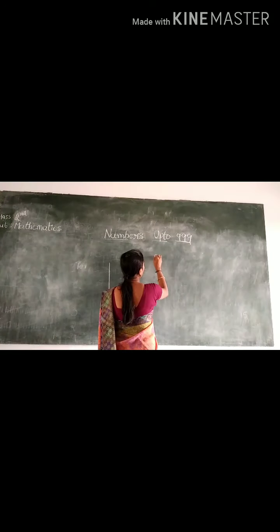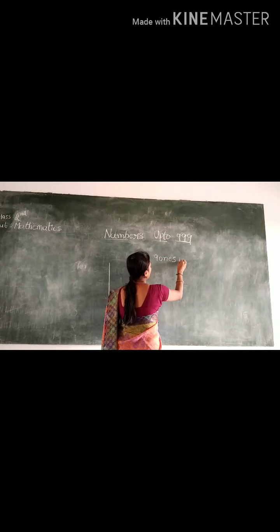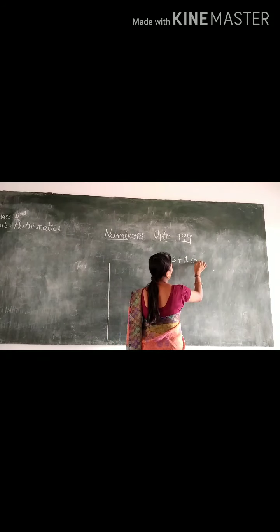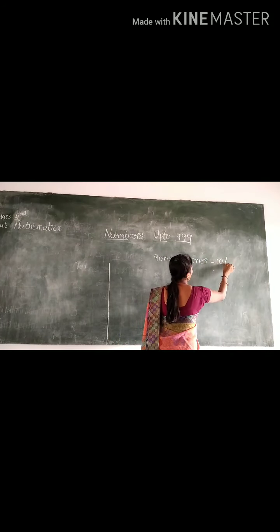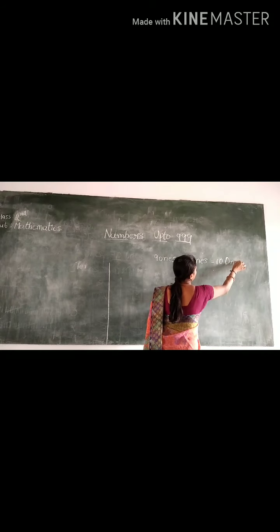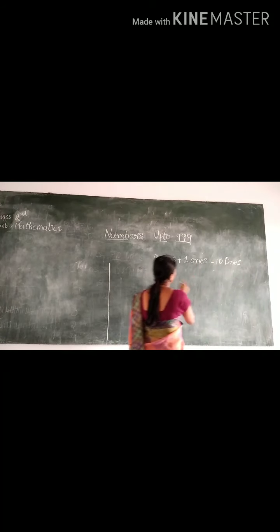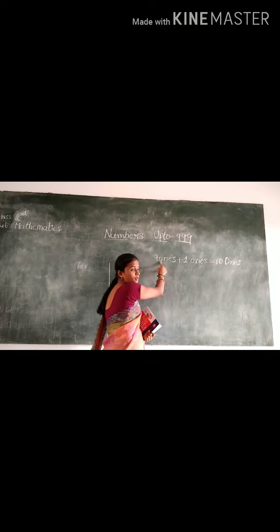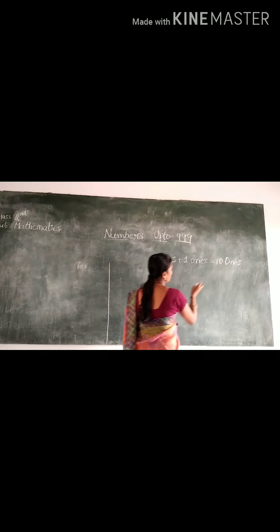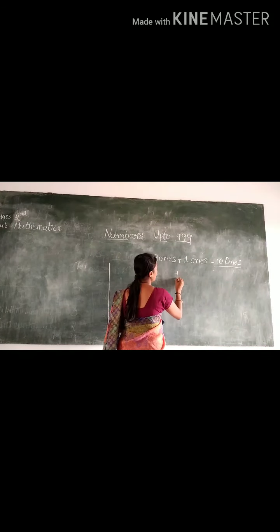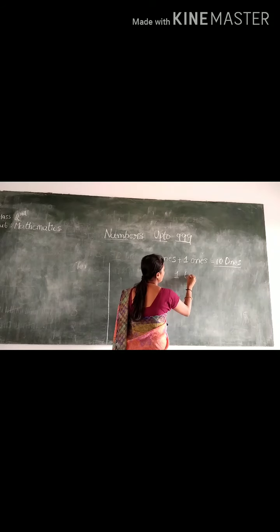Children, you all know 9 ones and 1 one make up 10 ones, right? 10 ones is also called as 1 ten. It can be represented as 1, 2, 3, 4, 5, 6, 7, 8, 9, and 10.